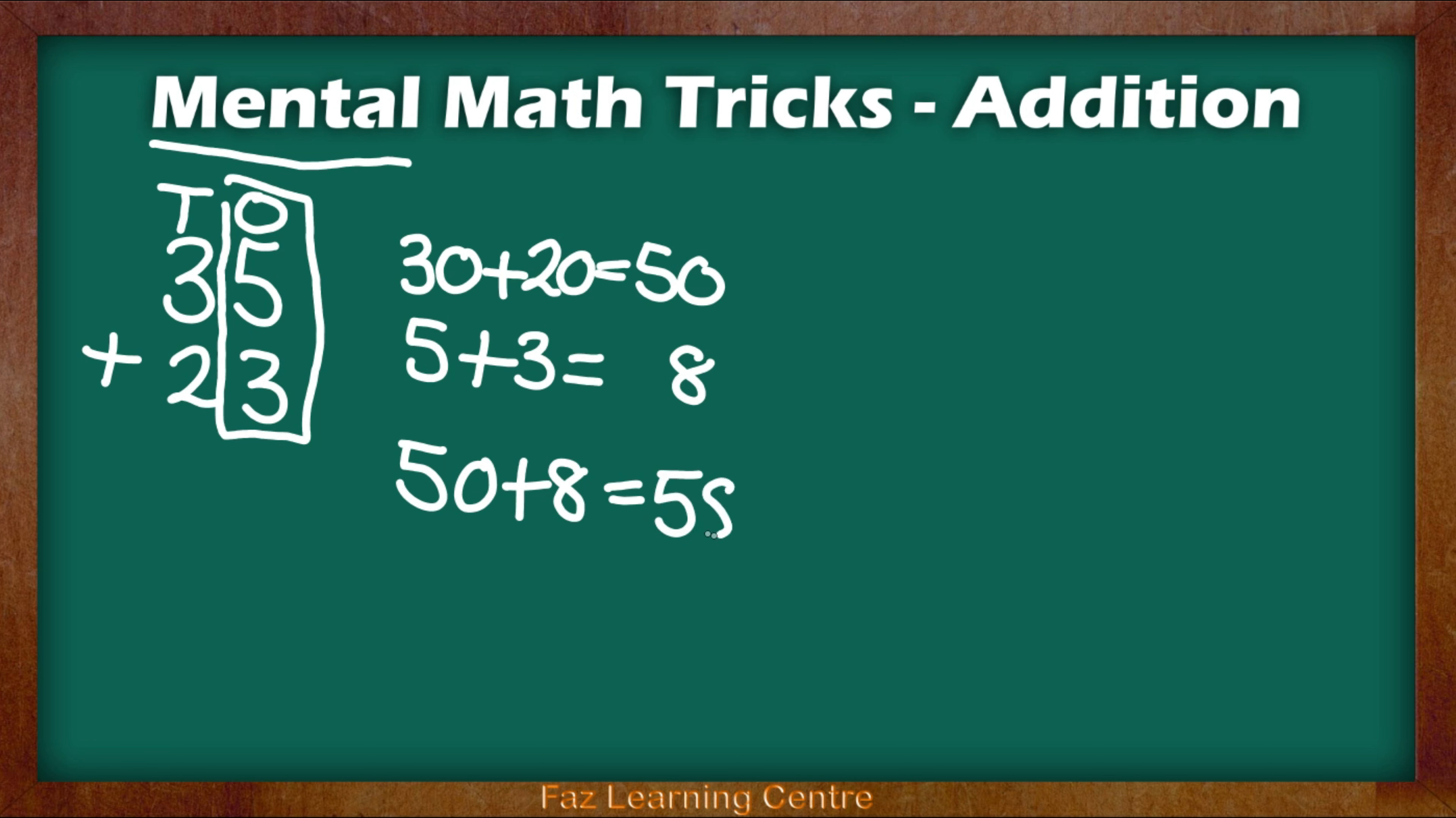However, I've written this down but I'm going to encourage you to do this mentally. In our head we think about the two digits that represent the tens. We say 3 tens and 2 tens. 30 add 20 gives us 50 and then we look at the ones and we say 5 add 3 equals 8. So 50 add 8 equals 58. Let's look at the next example.